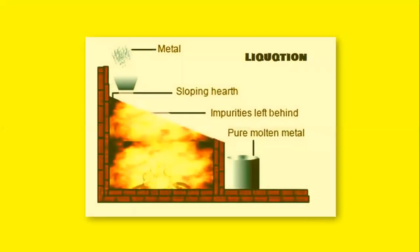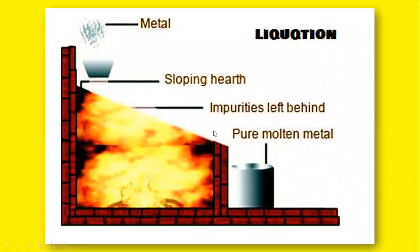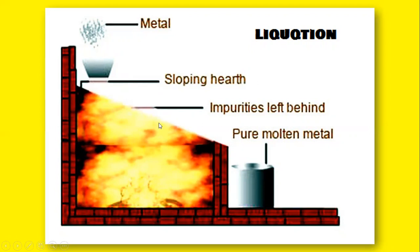In the liquation method, the impure metal is heated on a sloped hearth — a sloped surface of the reverberatory furnace. The metal easily melts and flows down in the molten form, and is collected as pure metal. The impurities which are present in the crude metal stay behind on the hearth and are thus separated.